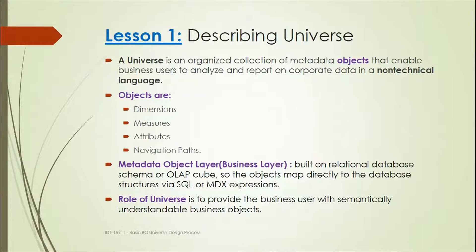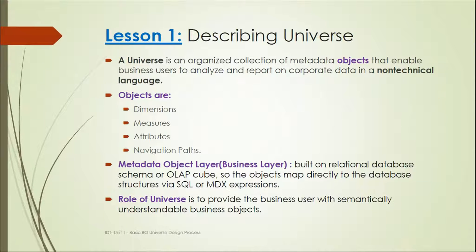These objects include dimensions, measures, attributes, and navigation paths. Dimensions include general names like first name and last name. Measures are numerical values like salary or sales revenue. Attributes are detail-level properties of dimensions — for example, if we have address, we may also have phone number as an attribute. Navigation paths are used for drilling in reports and can be built at the universe level.